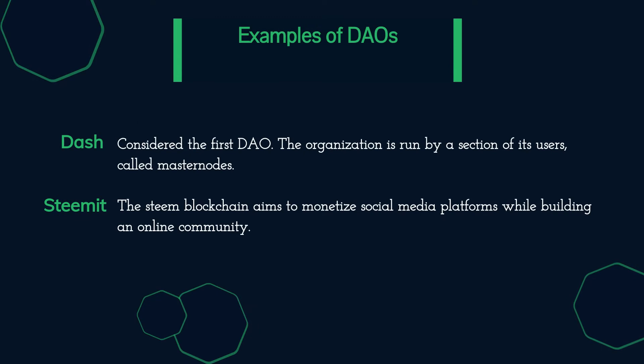Dash is considered the first DAO. The organization is run by a section of its users called masternodes — computers that put in extra work and heavily invest in Dash tokens. The Steemit blockchain aims to monetize social media platforms while building an online community. Users can submit work proposals that will benefit the platform, and if the proposal receives enough votes, the user is paid for completing the project.